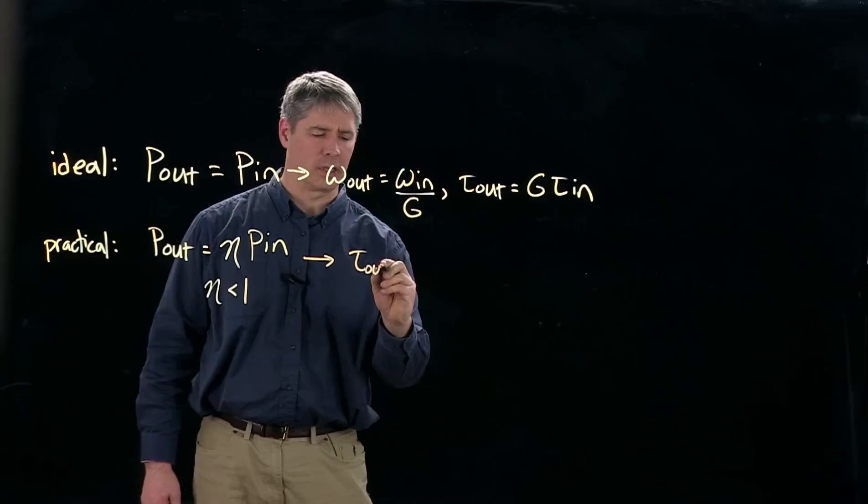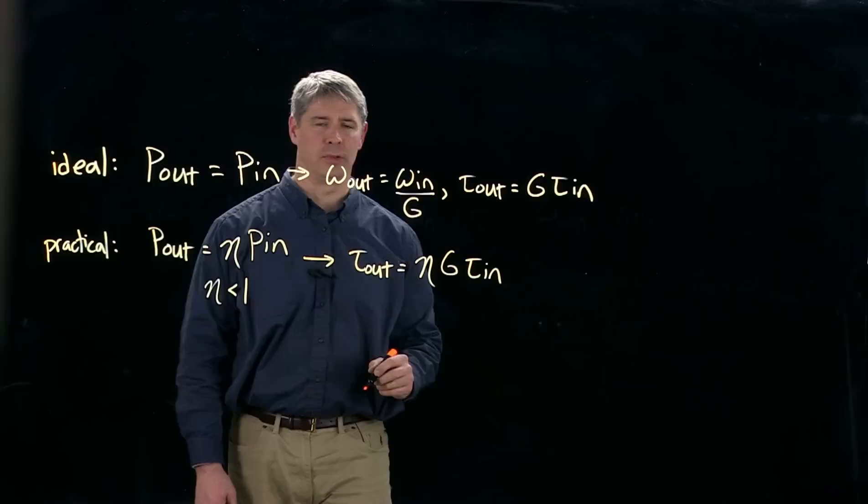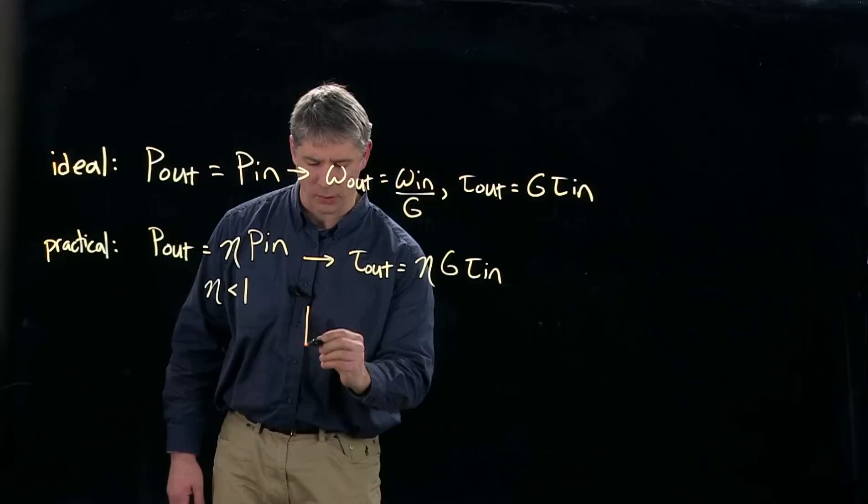So what this implies is that our output torque is equal to this efficiency coefficient eta times g times the input torque. We have some loss in torque due to the practical friction effects.